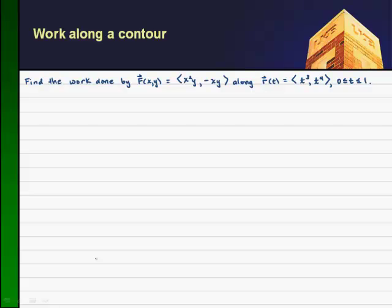So if we look at the r of t, that is the position vector, we can actually use the t cubed as our x parameterization and the y as our y parameterization. So I will let x equal to t cubed and y equals t to the 4th.